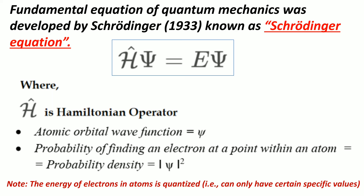It is an important point to note that the energy of electrons in an atom is quantized, meaning it can only have certain specific values. This is the meaning of quantization of energy.